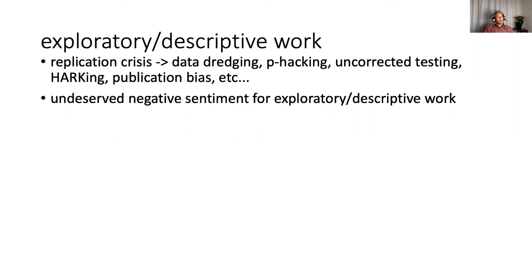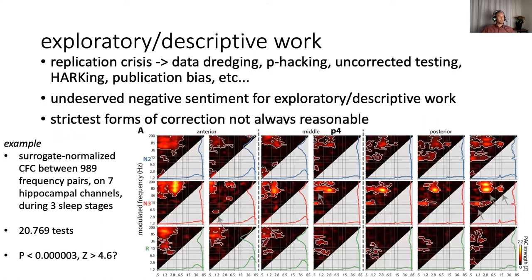Just to give you an example, a year ago or so we published this paper where we were interested in looking at which frequency pairs show coupling during sleep in the hippocampus. That was the main question. What we did is we calculated surrogate normalized cross-frequency coupling for 989 frequency pairs on seven hippocampal channels during three sleep stages. And so that's a total of 20,000 tests. It's not like that any statistician has told me you should correct for every individual pixel that you tested here. At the same time, if you're taking a strict approach to how we should be doing these things, that might actually be the suggestion.